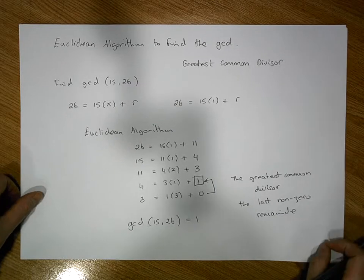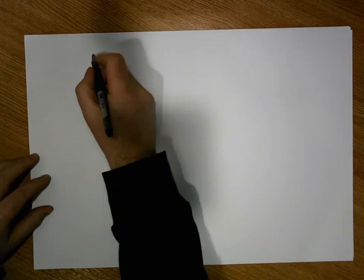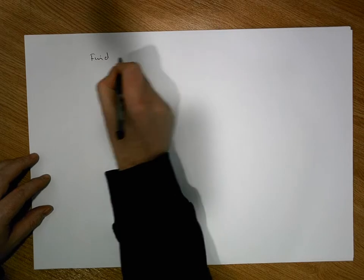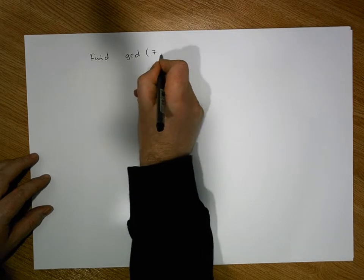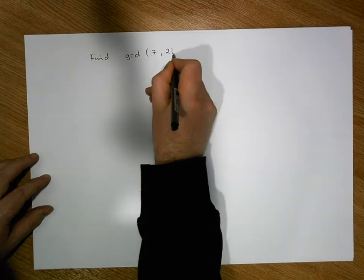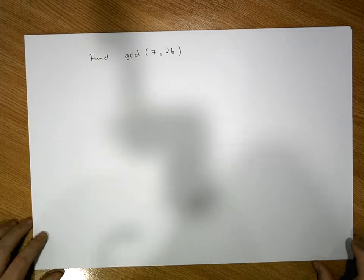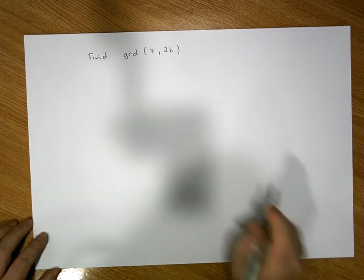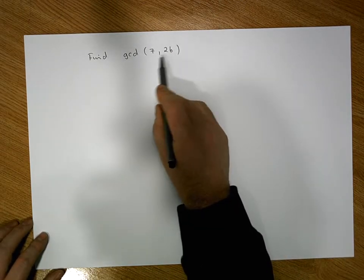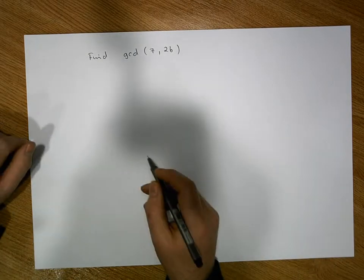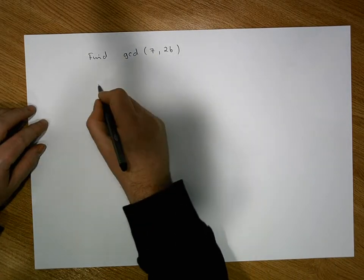Let's do another example. This time let's find the GCD, the greatest common divisor, of 7 and 26. Now, at this stage you probably know that they're actually relatively prime to each other, but let's apply the Euclidean algorithm.